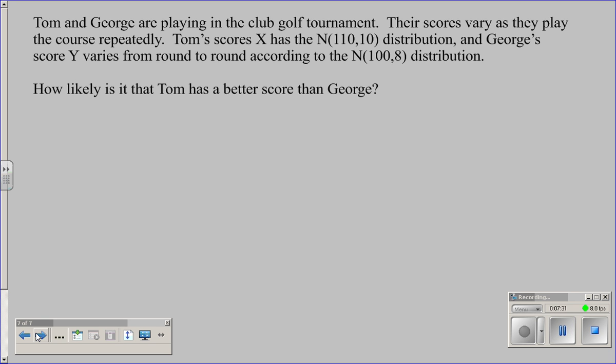Let's throw it all together. How likely is it that Tom has a better score than George? Tom has a normal distribution 110, 10. George also has a normal distribution 100, 8. I'm interested in a distribution of X minus Y. The mean of X minus Y means I can take the two means and simply subtract them. 110 minus 100, that's 10, which means that on average Tom takes 10 more strokes than George does.